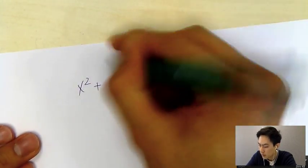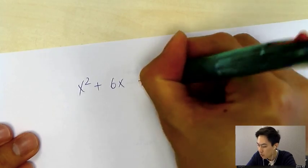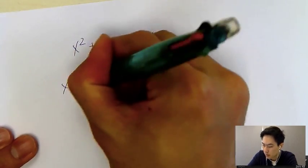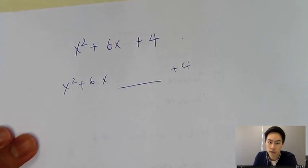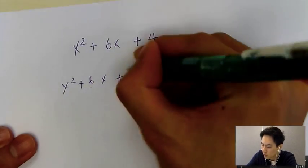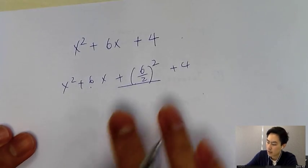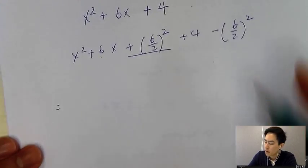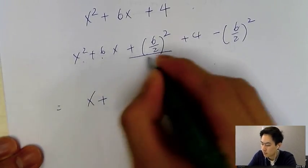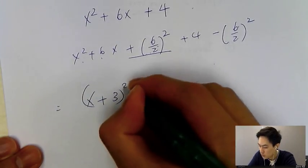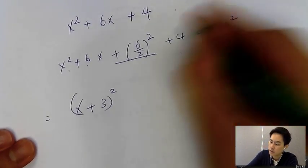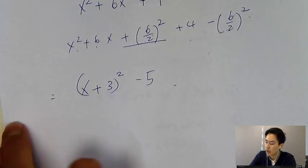Let me give you one more example: x² + 6x + 4. For completing the square, first consider the first two terms, leave a blank, and add the middle number over 2 squared — that's (6/2)². Since you're adding an extra term, you must subtract it too. So you get (x + 3)², and then 4 minus 3² gives 4 minus 9 equals −5. The answer is (x + 3)² − 5.